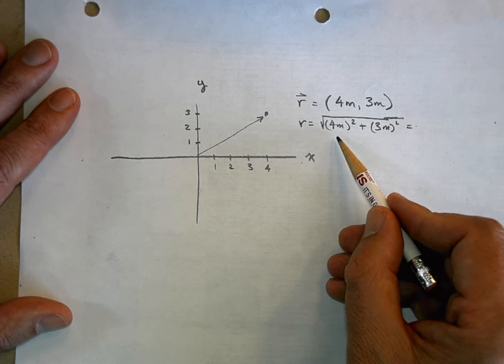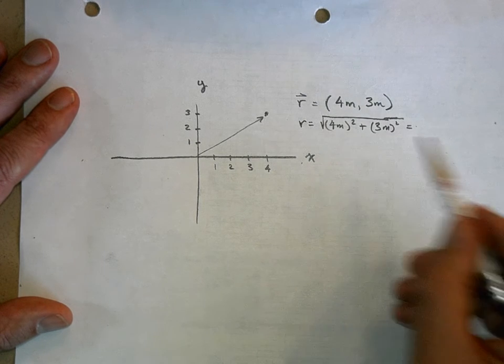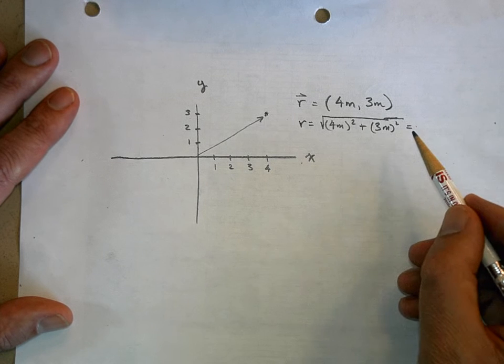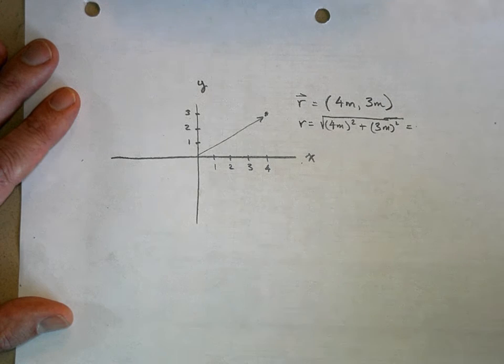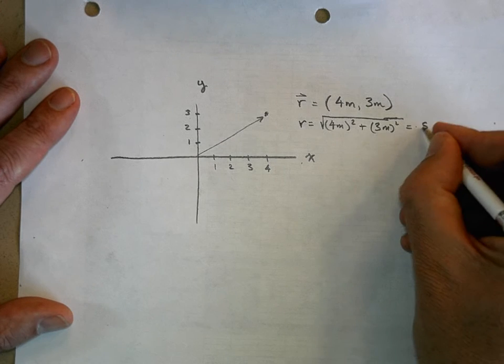What's four squared? 16 plus three squared? 9. 16 plus 9 is 25. Square root of 25 is 5. 5 meters.